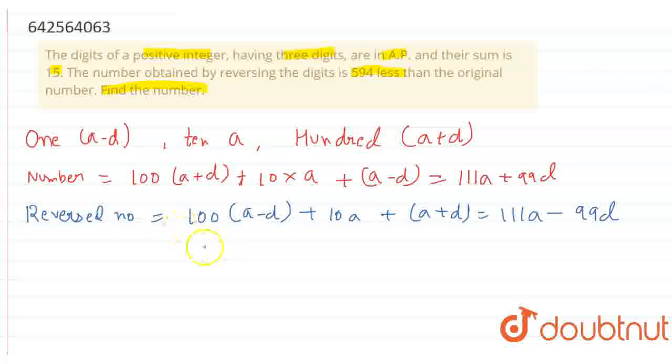So, after that, it's already given in the question A minus D plus A plus A plus D equals to 15. Therefore, 3A equals to 15. So when we solve this, we will get A equals to 5.